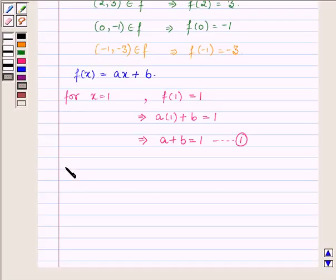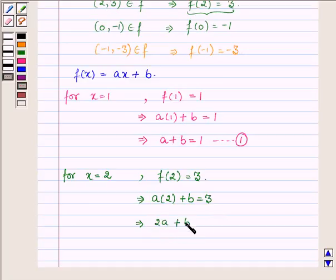Now for x = 2, we have the value of the function as 3. So this implies a(2) + b = 3, which further implies 2a + b = 3. Let this be equation number 2.